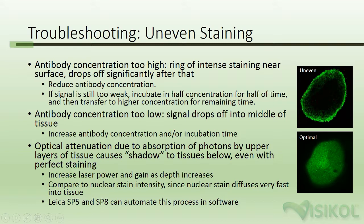Uneven staining can also be due to optical attenuation. Absorption of photons at the upper layers causes shadowing for tissues below, even with perfectly even staining. The way to get around this is to increase the laser power and gain as depth increases. You want to compare your immunolabeling to your nuclear stain intensity, since nuclear stains diffuse very fast into tissue. The Leica SP5 and SP8 can automate the process of compensation as depth increases.